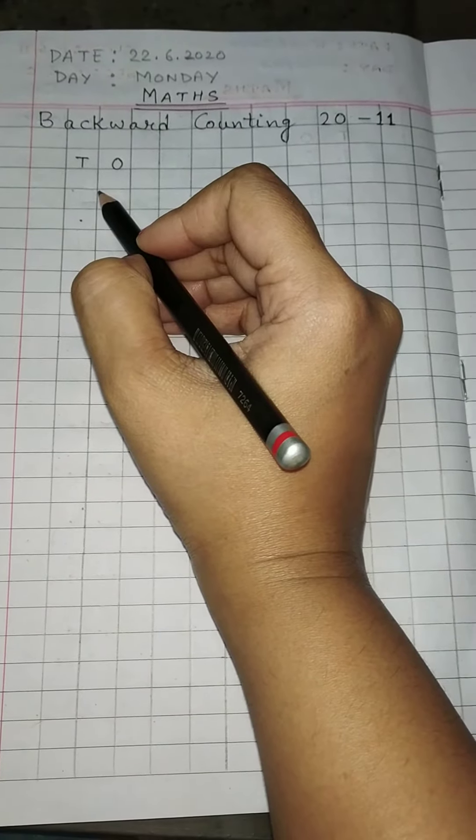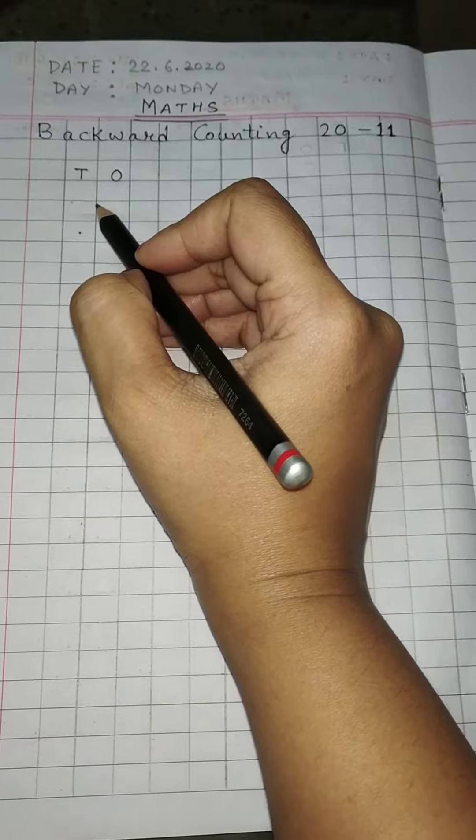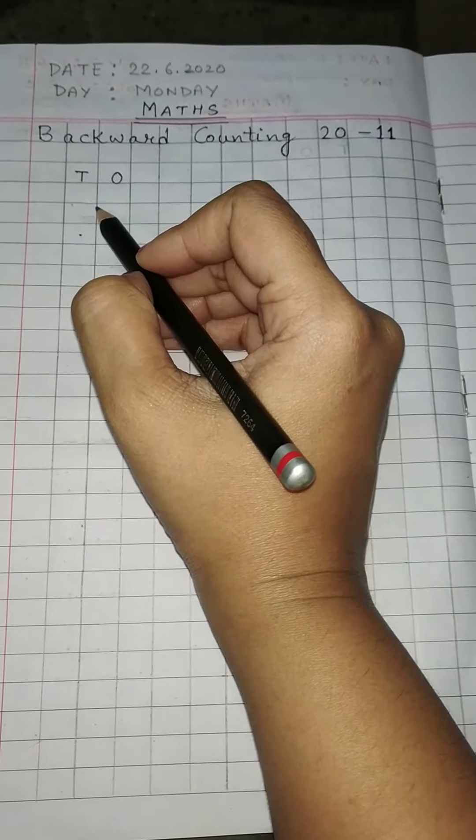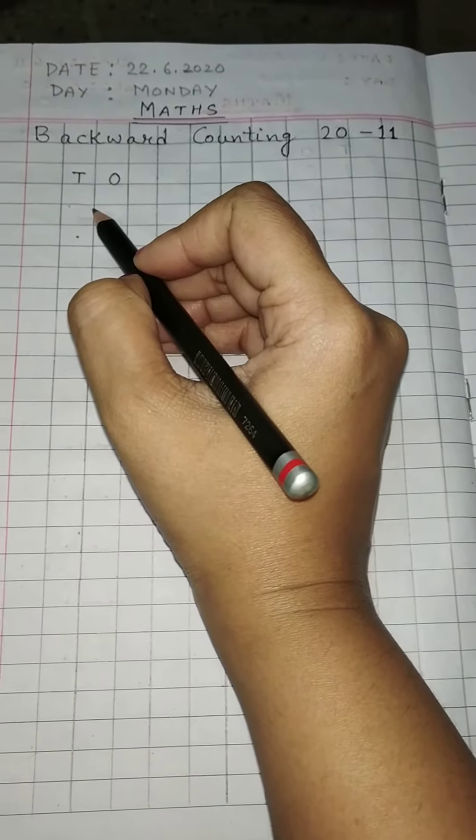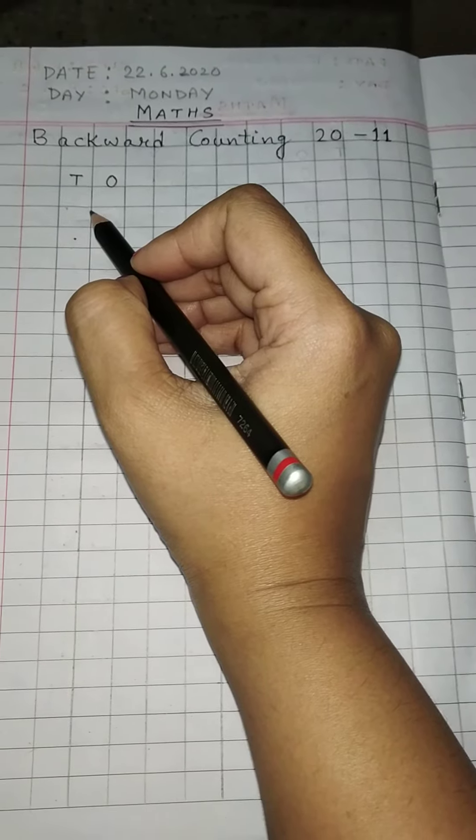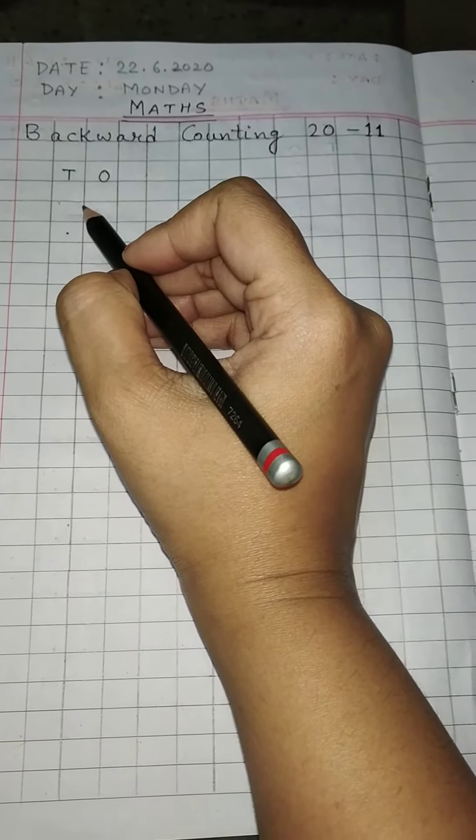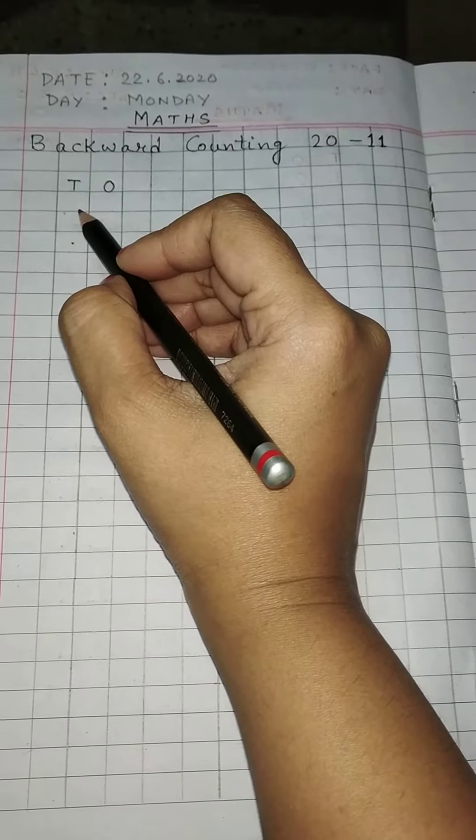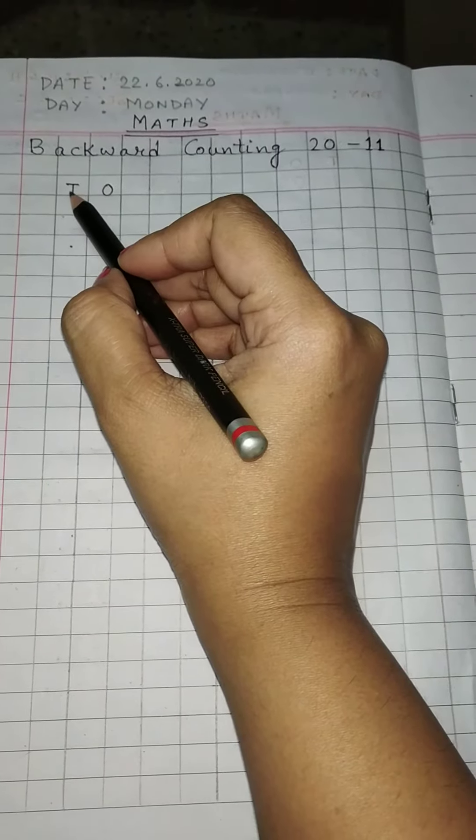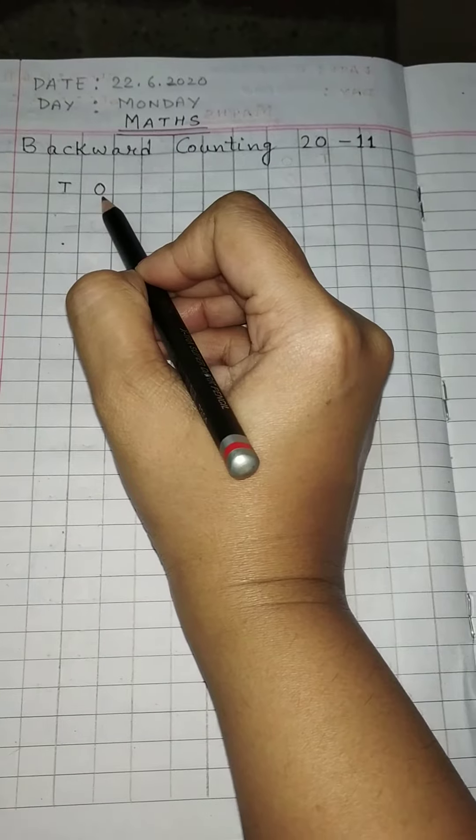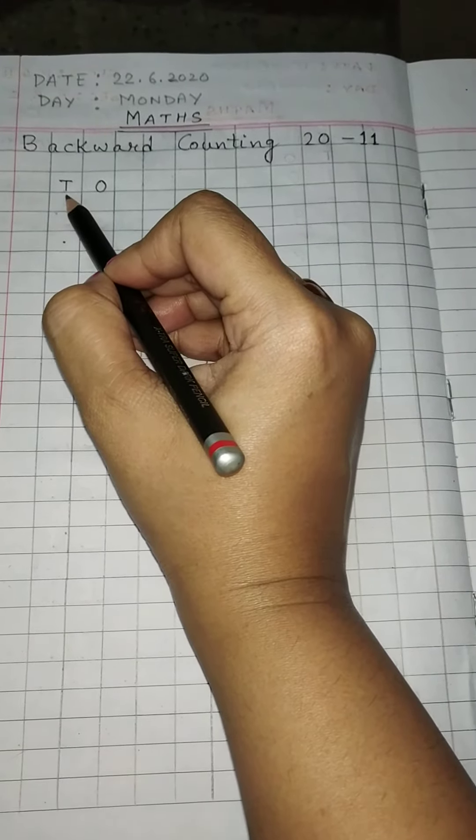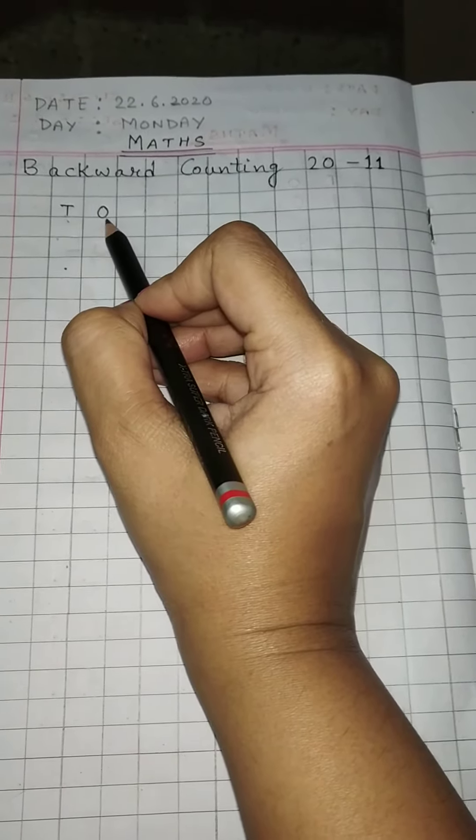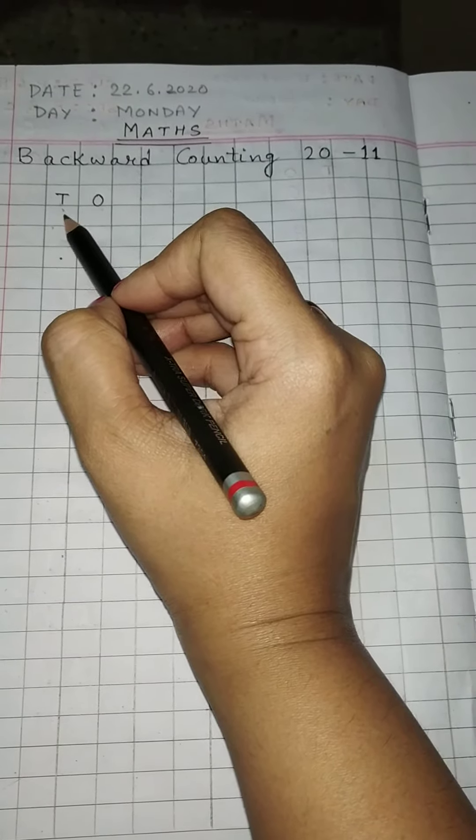Good morning students. In today's class we will be learning backward counting from numbers 20 to 11. As you can see, I have written here T and O. T stands for tens and O stands for ones.